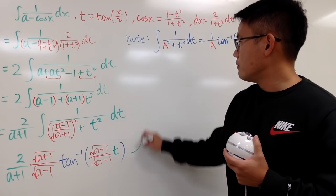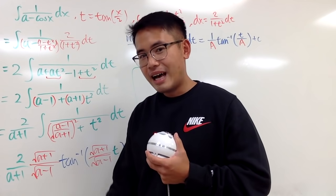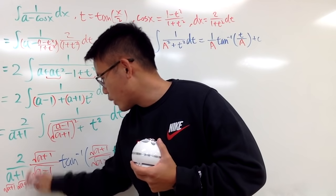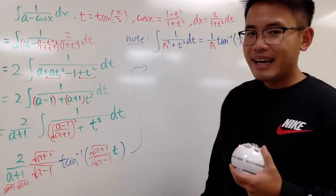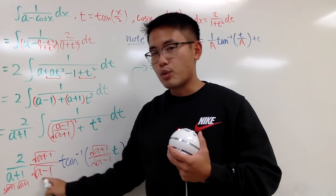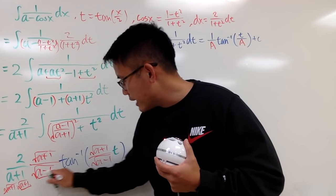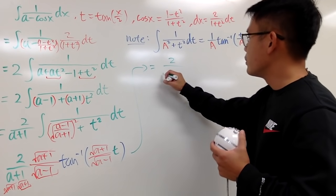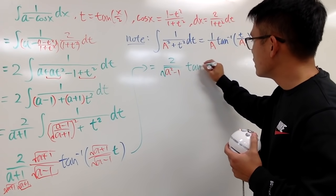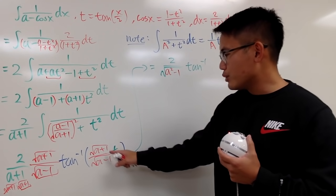Let me simplify. I write (a + 1) as √(a+1) · √(a+1), so the √(a+1) in the numerator and one factor cancel. On top I have 2, and multiplying the square roots in the denominator gives √[(a+1)(a-1)] = √(a² - 1). So we have 2/√(a² - 1) times arctan(...).